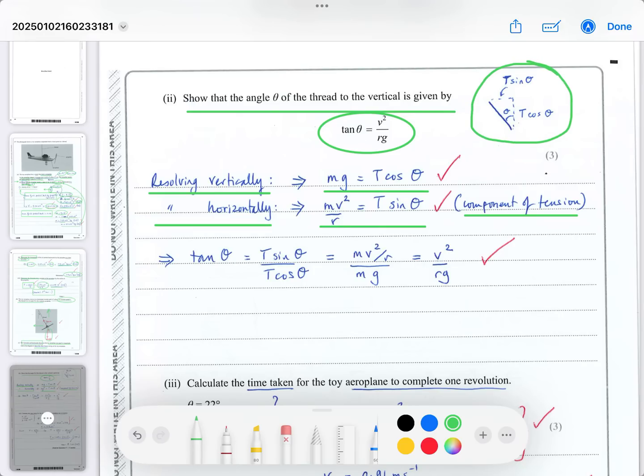Looking at the diagram, T sin θ pulls toward the circle's center and T cos θ holds the weight up, forming a right triangle. So tan θ = opposite/adjacent = T sin θ / T cos θ. We know T sin θ = mv²/r and T cos θ = mg. Dividing these, the masses cancel to give tan θ = v²/rg, proving the equation.